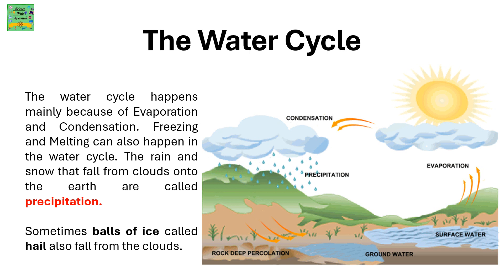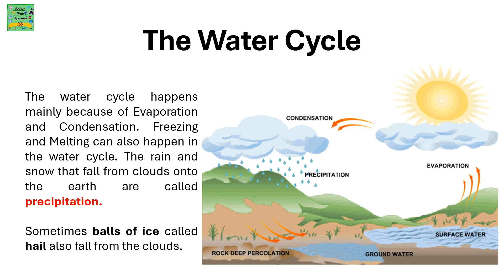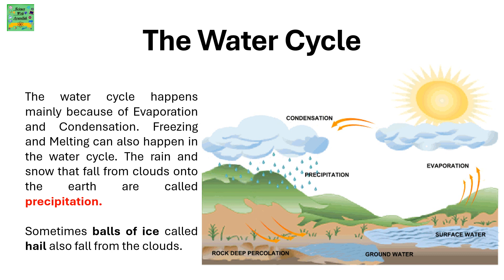The water cycle. The water cycle happens because of two processes: the first one is evaporation and the second is condensation. Melting and freezing can also happen in the water cycle. The rain and snow that you see fall from clouds onto the earth are called precipitation. Sometimes balls of ice, which is called hail, also fall from the clouds.